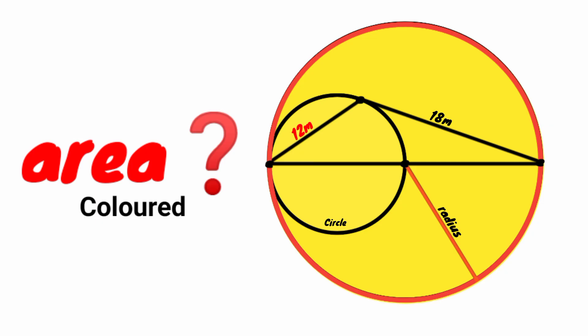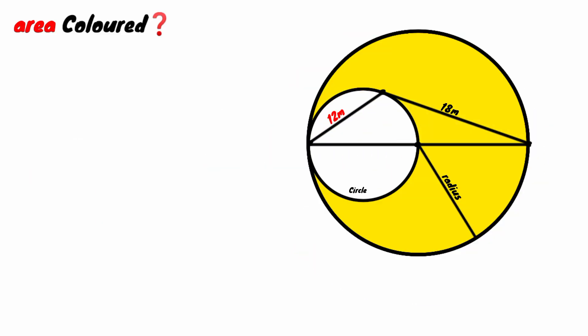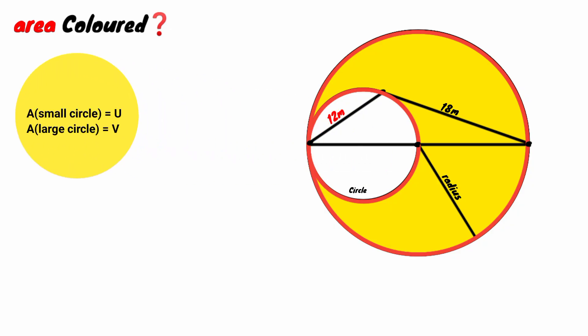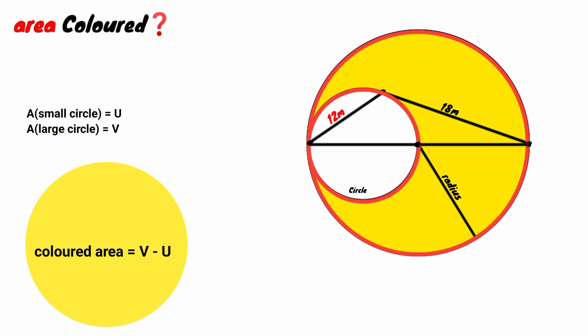So how can we solve this? How can we calculate the area in yellow? Obviously, from this big circle, if we subtract the area of the small circle, we'll have the colored area. So we say area of small circle equals U, and area of big circle equals V. Therefore, colored area equals V minus U.